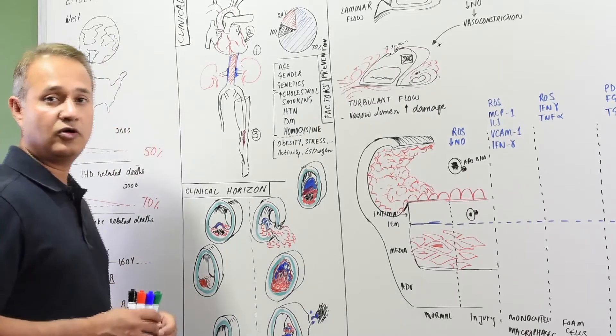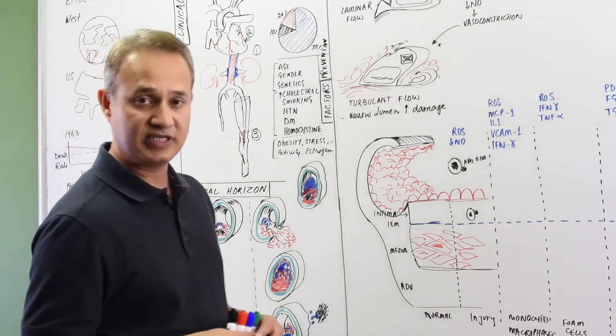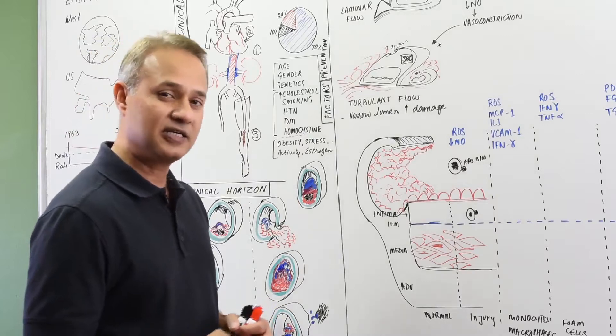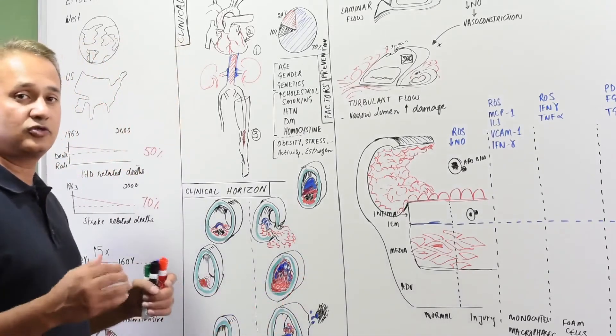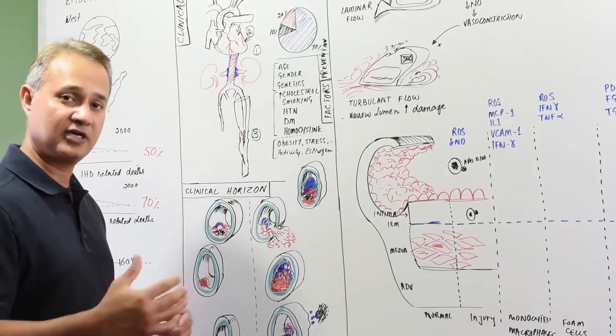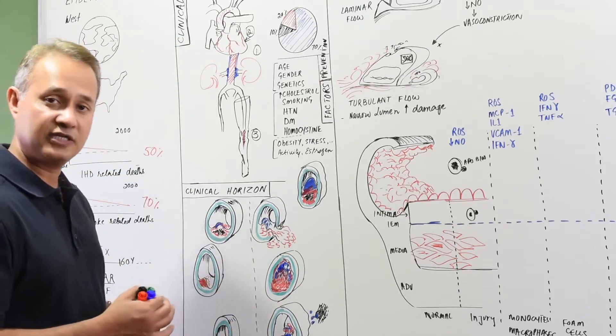And then similarly, homocysteine or increased homocysteine levels are also suspected to be a problem, not fully known. But this is true that when the homocysteine levels are higher, there is increased propensity for atherosclerosis.